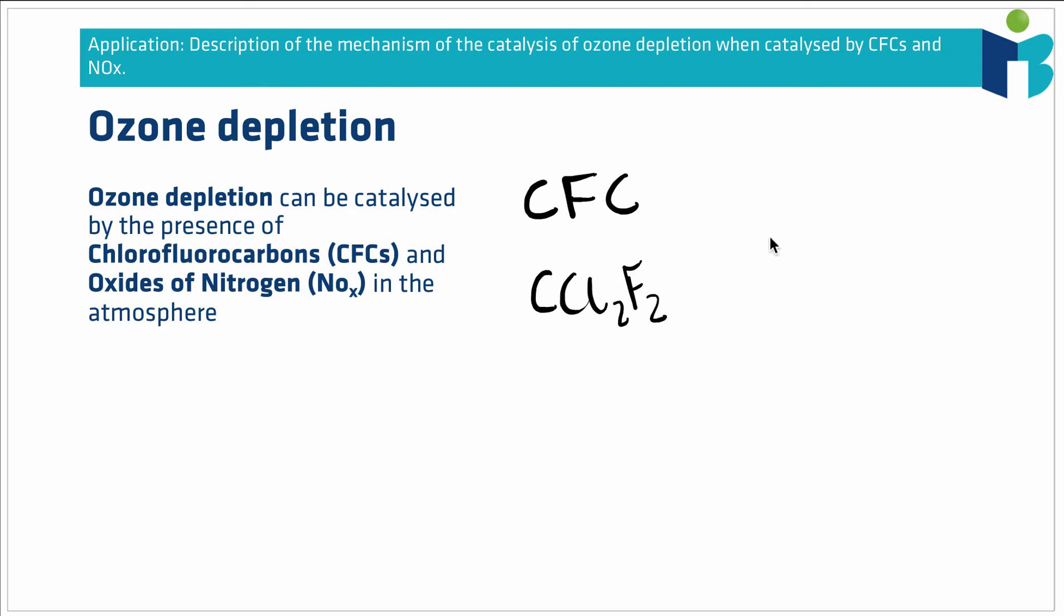Another example of important molecules for the depletion of ozone are oxides of nitrogen. You sometimes see these referred to as NOx. This x can be a number of different numbers: NO, nitrogen monoxide, NO2, nitrogen dioxide. All of these can be dangerous to ozone in the ozone layer. The key example we're going to think of here is NO, nitrogen monoxide.